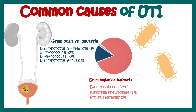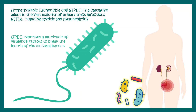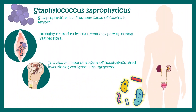Very few cases of urinary tract infections are non-bacterial; some fungal infections can also cause UTI. The most common causative agent is uropathogenic E. coli, which expresses a multitude of virulence factors that can break the mucosal barrier, invade the bladder, and lead to cystitis. Staphylococcus saprophyticus is also a very common cause of cystitis in women, possibly related to natural vaginal flora or catheter-acquired infection.